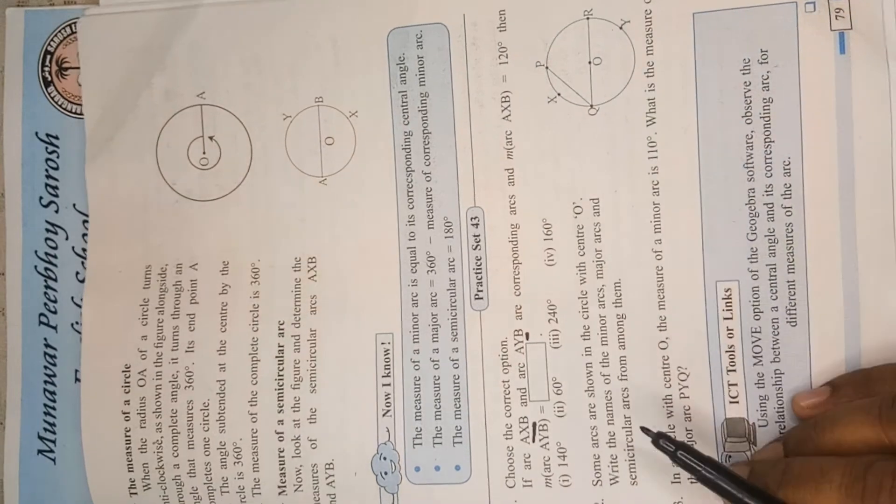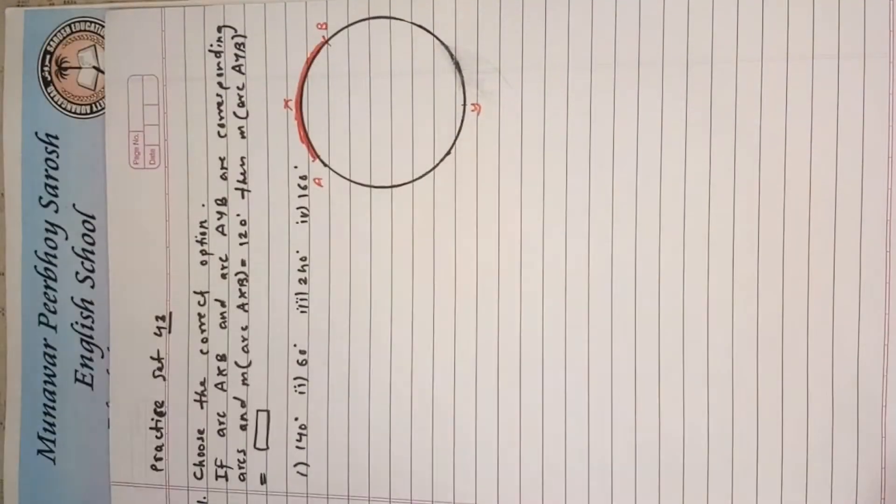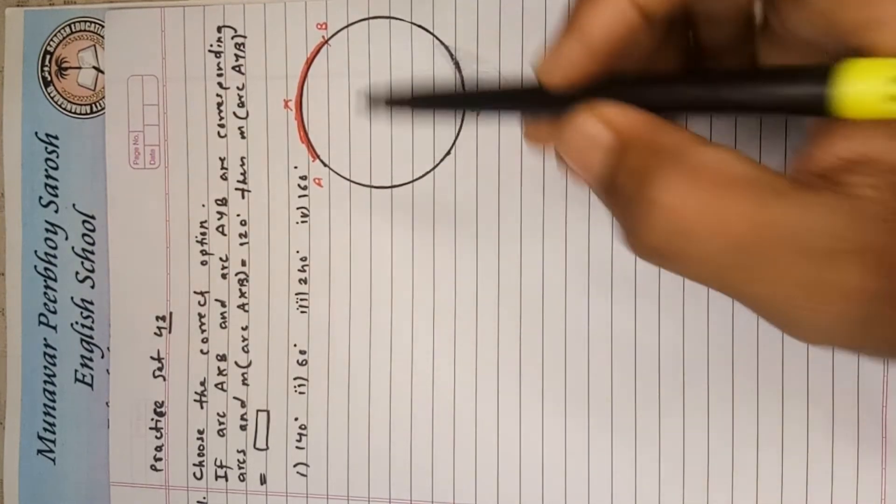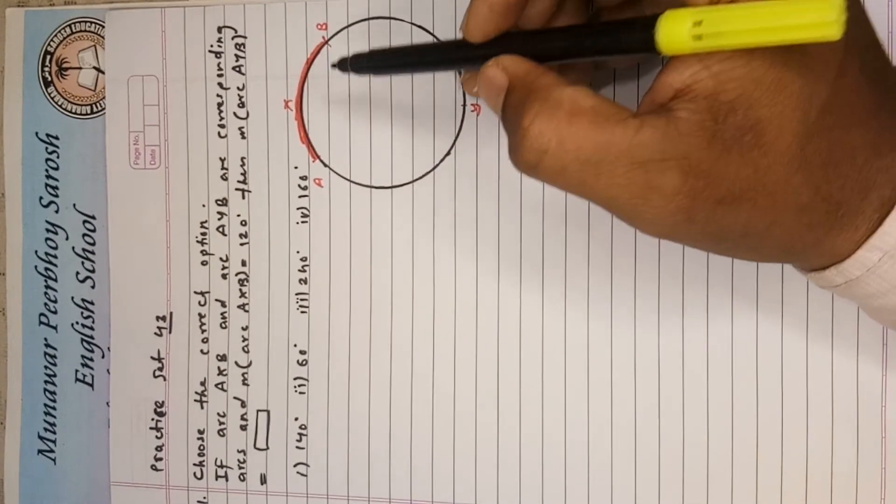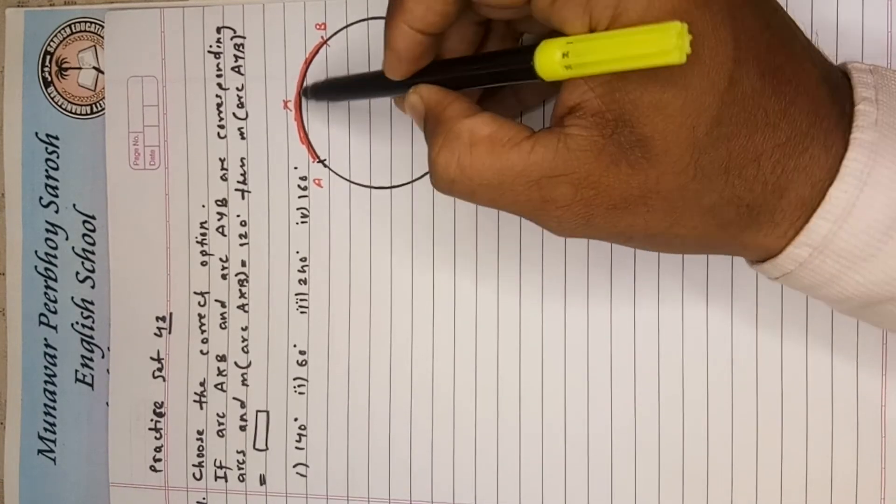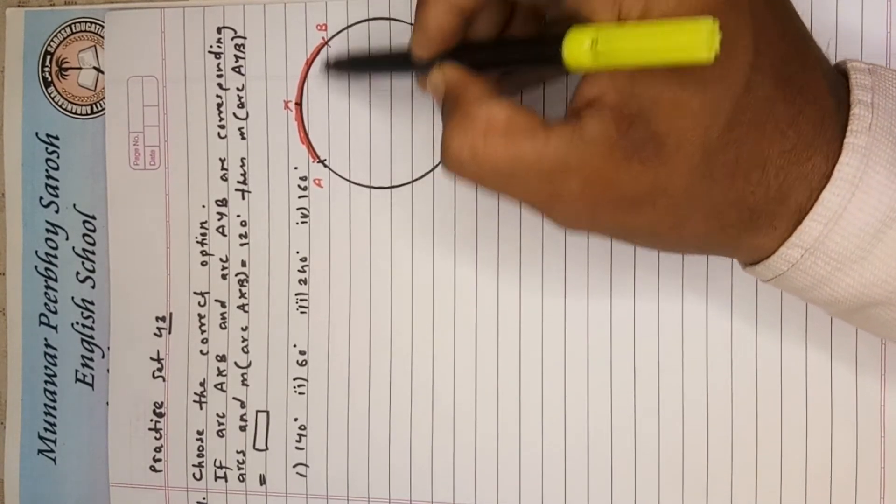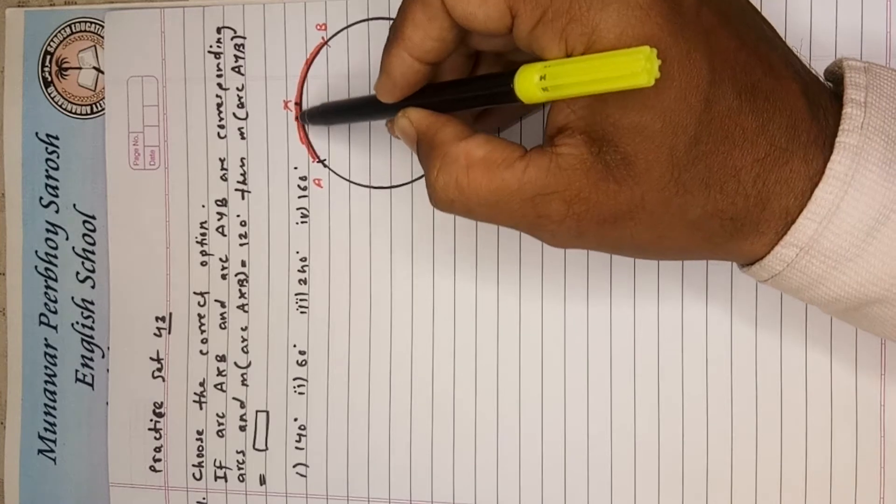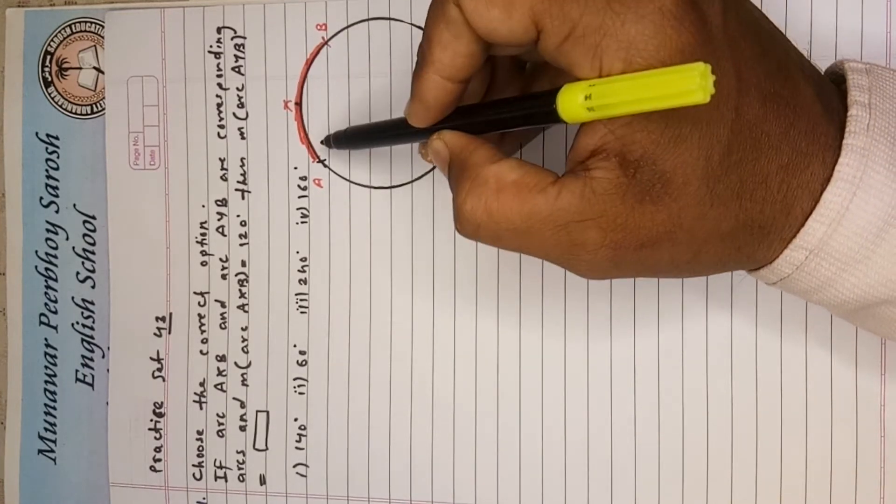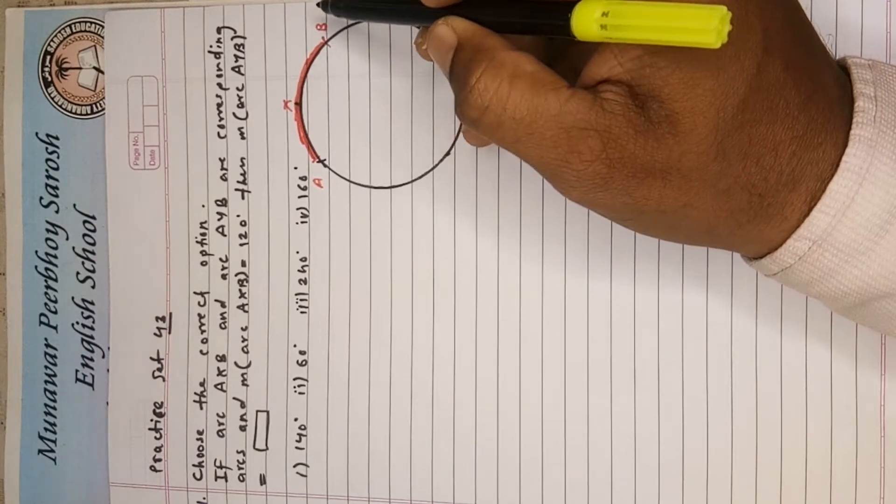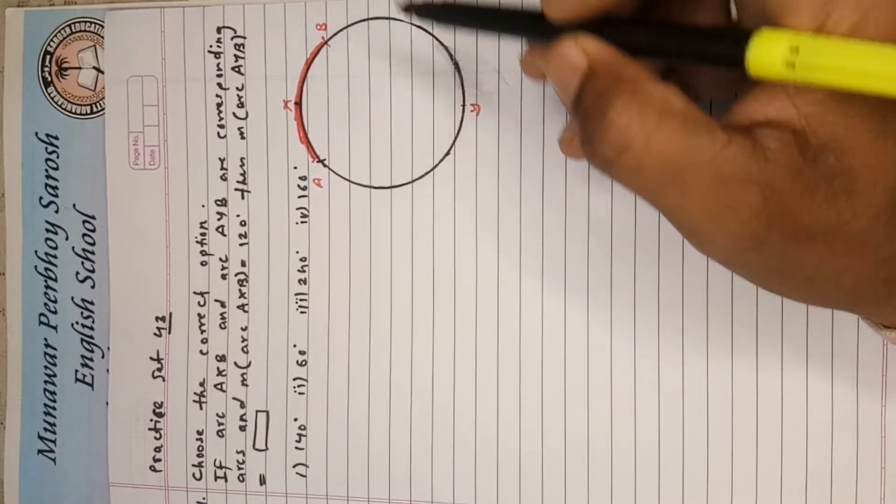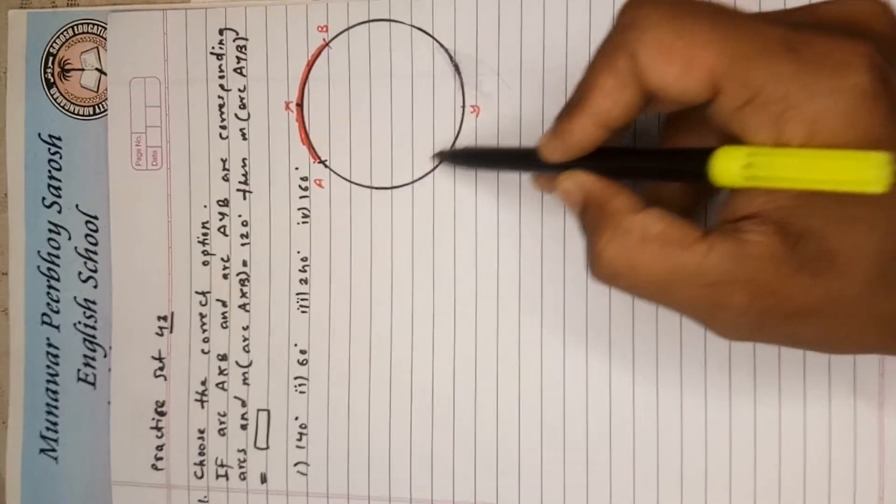Now see the solution. I have drawn a circle over here for you to show the arc AXB. This is the arc AXB, and they have given the measurement of this arc that is equal to 120 degree. And they are asking us to find the measurement of the arc AYB.